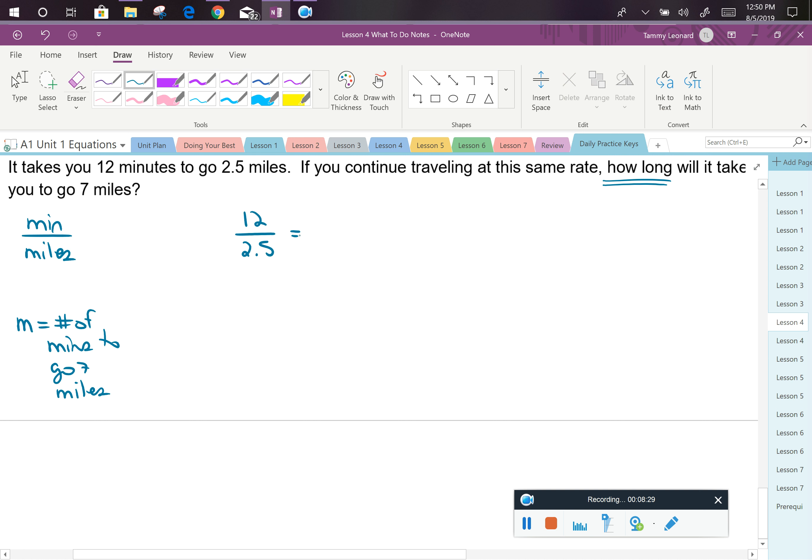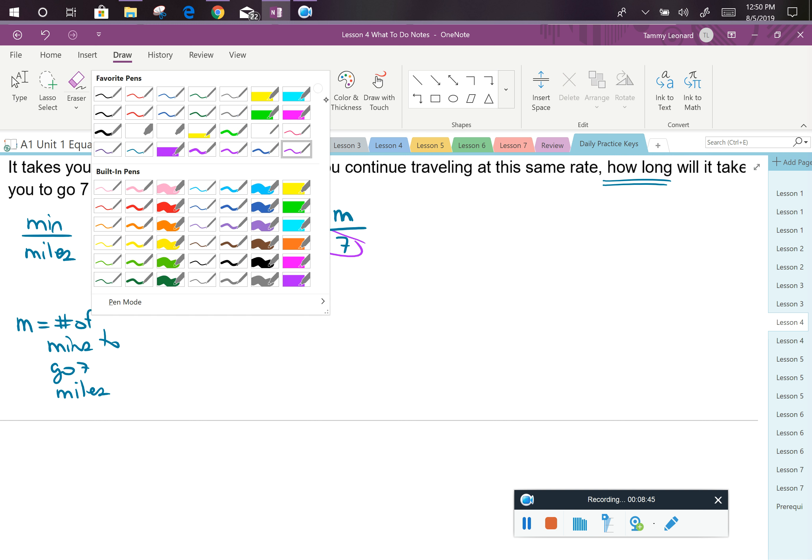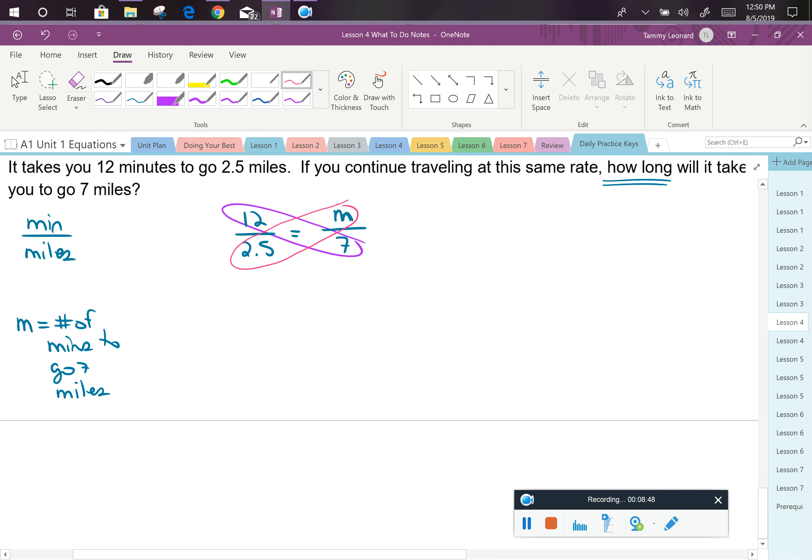And my two fractions need to be equal to each other. So minutes are what I don't know this time. So I'm going to leave an m where the minutes go. But I know miles is 7. When I do my cross multiplying, I'm going to multiply the 12 and the 7. And I'm also going to need to multiply the 2.5 and the m. So I have 2.5m is equal to 84. To get the m alone, I'm going to have to divide both sides by that 2.5. And therefore, I can see that m is equal to 33.6 minutes.